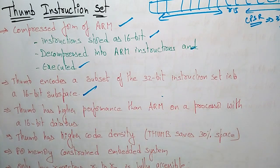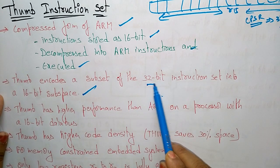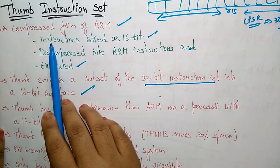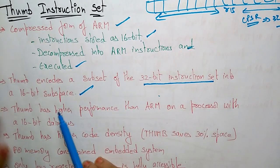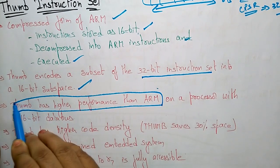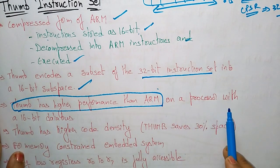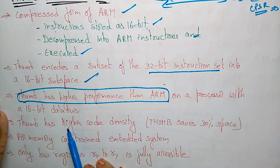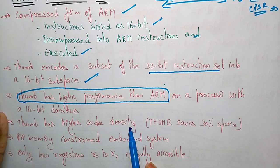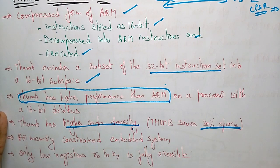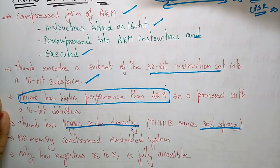The Thumb encodes a subset of the 32-bit instruction set into a 16-bit subspace, so instructions are stored as 16-bit. Thumb has higher performance than ARM on a processor with a 16-bit data bus. Thumb also has higher code density, saving up to 30 percent of memory space.